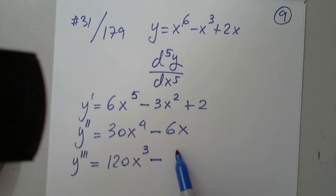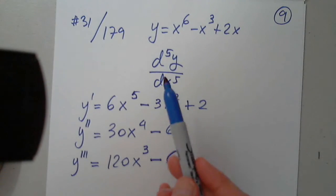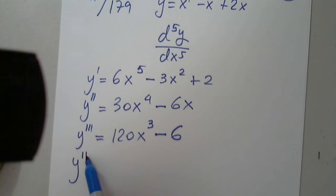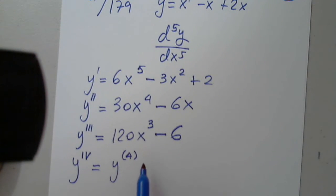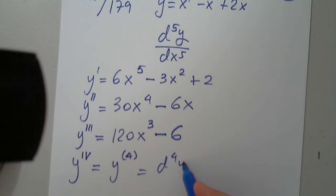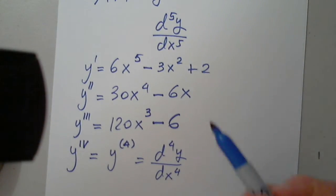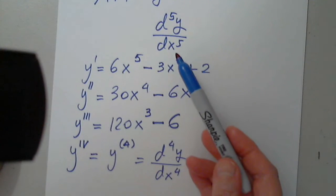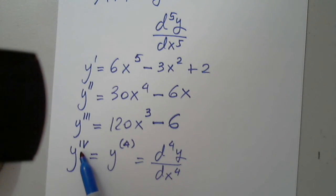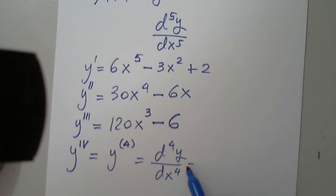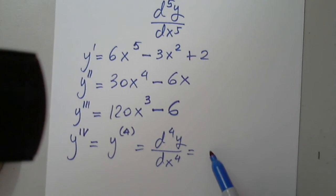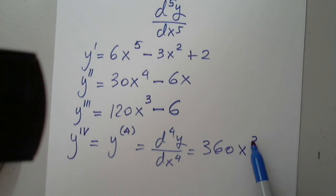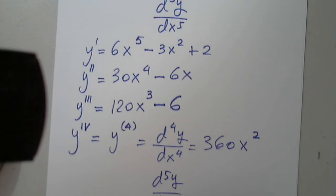Minus 6 — so we have the first, second, and third. They want us two more: the fourth. We can also write this as d⁴y over dx⁴. That's why this notation becomes more convenient after a while — the roman numeral or parentheses notation might look like a power, so the Leibniz form may be cleaner. Can anyone give us this? 360x squared — very good. Finally, d⁵y over dx⁵?